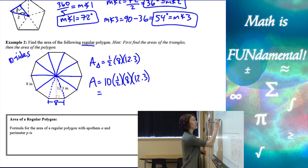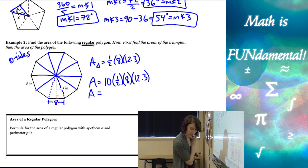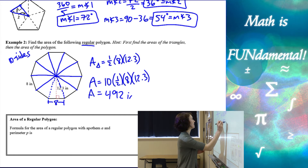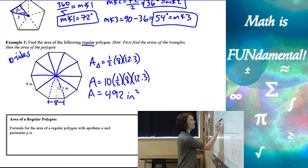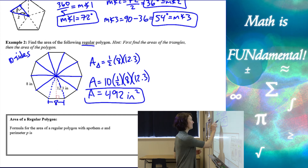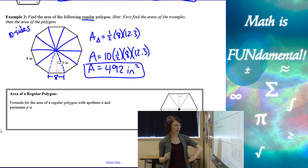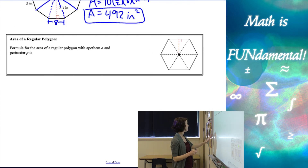If I simplify this, I have 492 inches squared using my calculator. That is the first example.